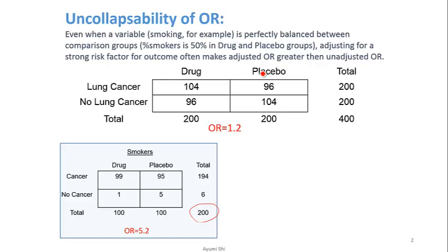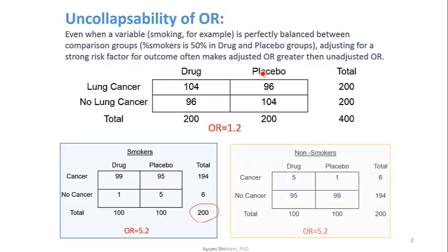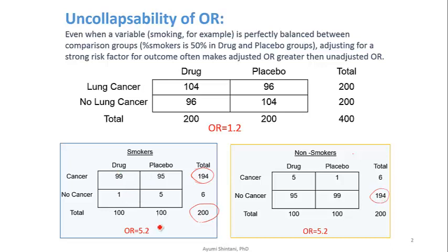The other 200 patients are non-smokers, again with fifty percent in each group. Within smokers, there is a much higher number of people with cancer, and within non-smokers, a much higher number without cancer. Based on this, we compute the stratified odds ratios, which are 5.2 for both the smoker and non-smoker subgroup analyses.